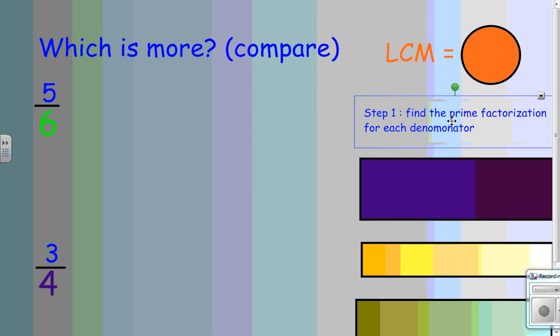If you forgot how to do prime factorization, you may have to go back and check out that video, but we're going to break the number down into prime numbers that, when multiplied, their product is equal to the composite number of our denominator. So, two times three is the prime factorization of six, and the prime factorization of four is two times two.